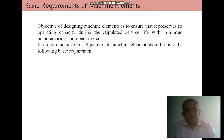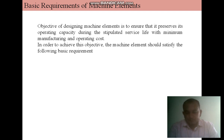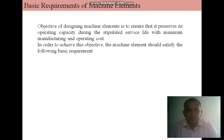The next topic is the basic requirements of machine elements. Each part of a machine that has motion with respect to some other part is called a machine element. It is important to note that each machine element may consist of several parts manufactured separately. The objective of designing a machine element is to ensure it preserves its operating capacity during the stipulated service life with minimum manufacturing and operating cost. To achieve this, the machine element should satisfy various basic requirements based on different criteria.